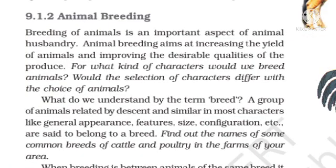Animal Breeding. Breeding of animals is an important aspect of animal husbandry. Animal breeding aims at increasing the yield of animals and improving the desirable qualities of produce. A group of animals related by descent and similar in most characters like general appearance, features, size, configuration, etc. are said to belong to a breed.